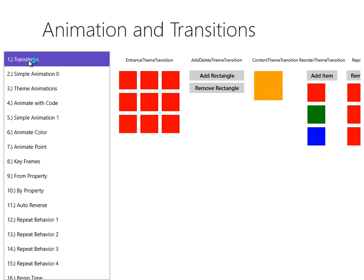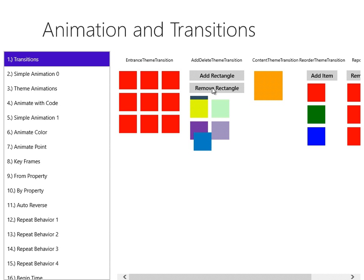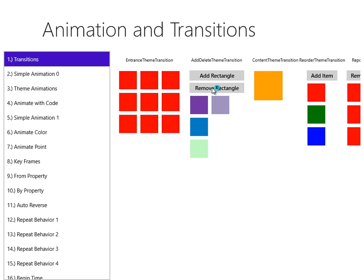For our next example, we're going to use the add-delete theme transition. Here I'm going to add rectangles programmatically, each given a random color. As each one comes into place, you can see it sort of glows in — it doesn't just appear, it fades in. If I remove a rectangle, you can see that they rearrange themselves. This uses the same transition as the remove item theme transition.